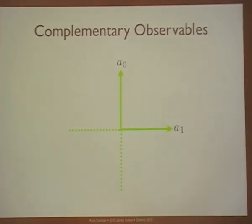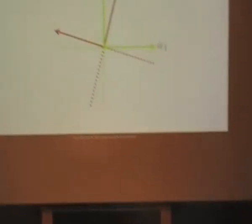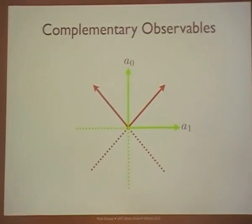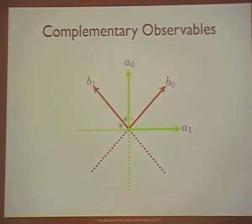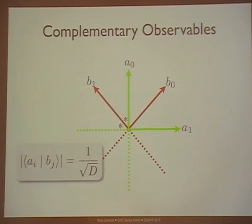Generally, if I'm already in an eigenstate of x, I have a certain outcome when measuring x but equal probabilities when measuring z. That's what it means for an observable to be complementary with another observable. More generally, I'm going to think of any basis on the space as defining an observable, and we call them complementary when for each pair of vectors the inner products are always equal. This is called mutually unbiased bases, or complementary observables.